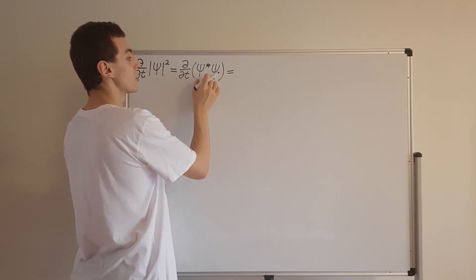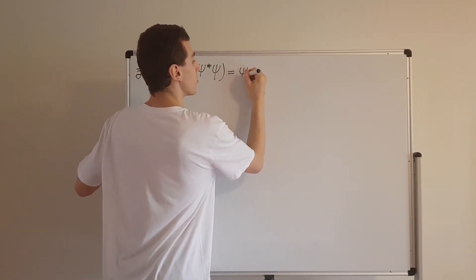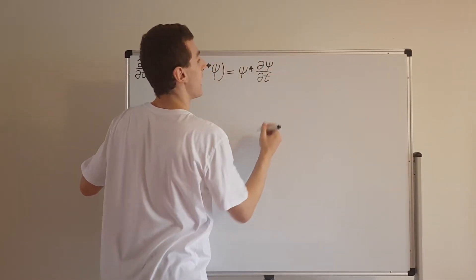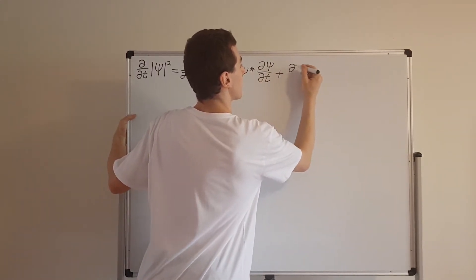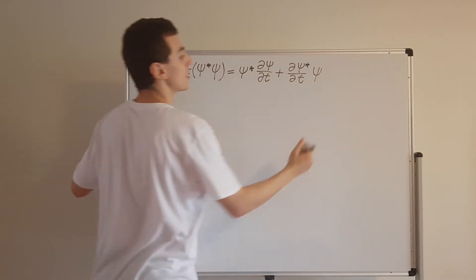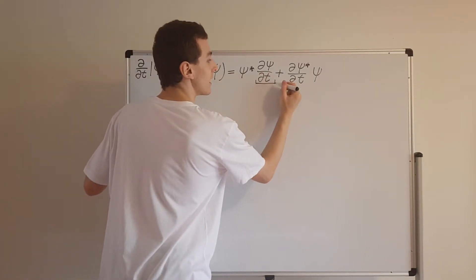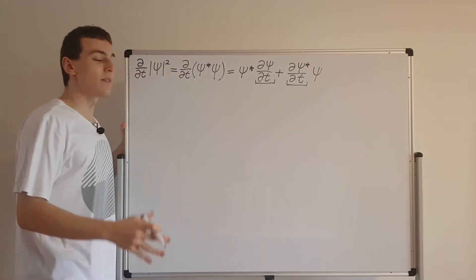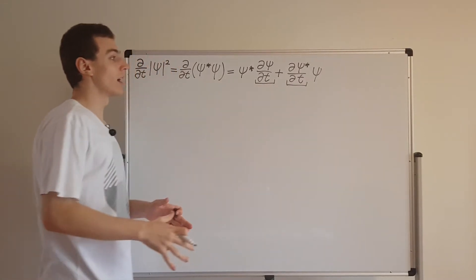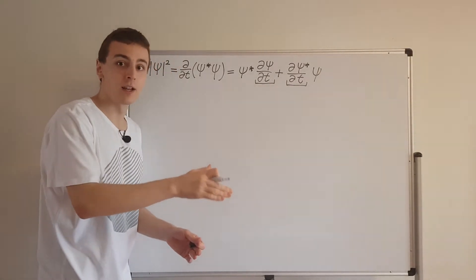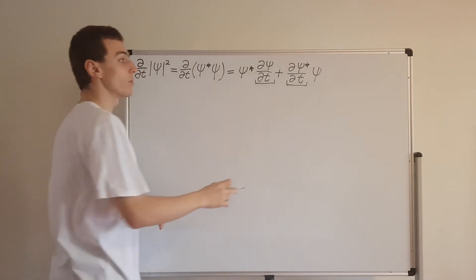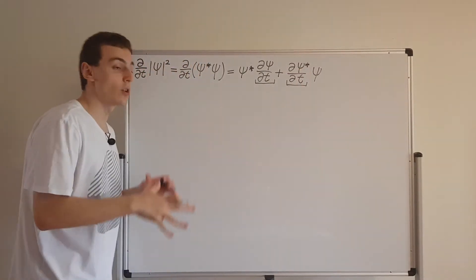Expanding this out using the product rule, keeping the psi star term on the left, we get psi star times the partial time derivative of psi, plus the partial time derivative of psi star times psi. We can actually rewrite these using the Schrödinger equation. The left-hand side of the Schrödinger equation has i h-bar times this term. Dividing both sides by i h-bar gives us an expression for the partial time derivative of the wave function.